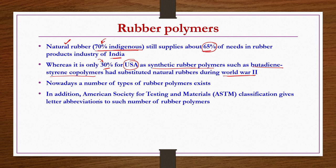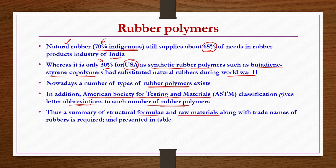Nowadays, a number of types of rubber polymers exist. Because of this wide variety, the American Society for Testing and Materials (ASTM) has assigned letter abbreviations to such rubber polymers. A summary of structural formulae, raw materials, and trade names of such rubbers is provided in a table, since technical terminology may not be understood by consumers.